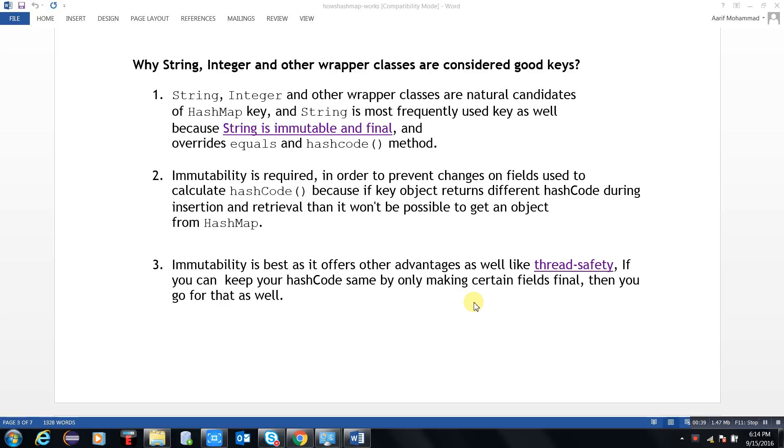String can't change and is final, and String overrides both equals and hashCode methods. Immutability is required in order to prevent changes on fields used to calculate hashCode, because if the key object returns different hashCode during insertion and retrieval, then it won't be possible to get an object from the HashMap.